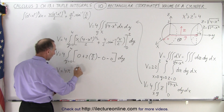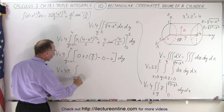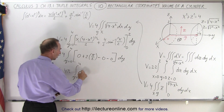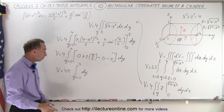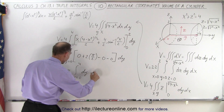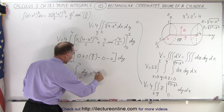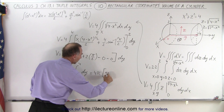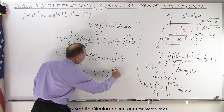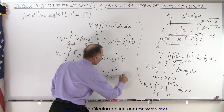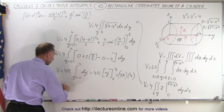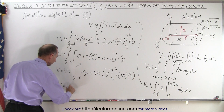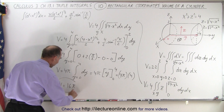So the volume equals 4π times the integral from y = 0 to y = 4 of dy. The integral of dy is simply y, so we get 4π times y evaluated from 0 to 4, which is 4π times 4. Therefore, the volume equals 16π.